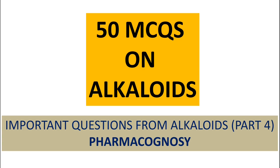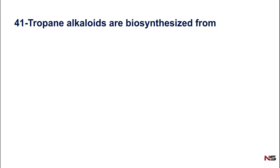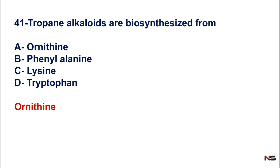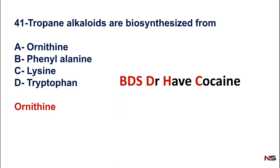Question 41: For what are tropane alkaloids biosynthesized from? Options: A) ornithine, B) phenylalanine, C) lysine, D) tryptophan. The correct answer is ornithine — option A.